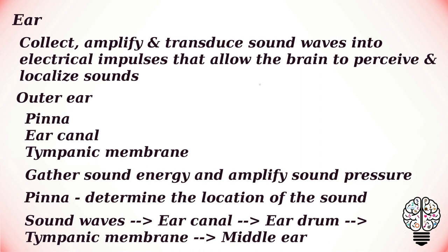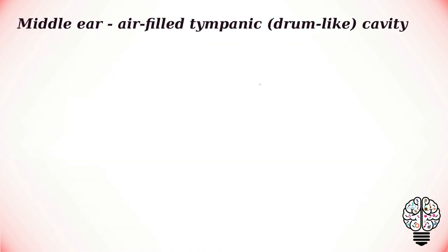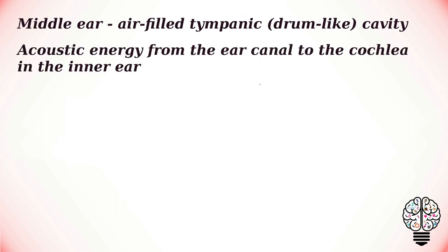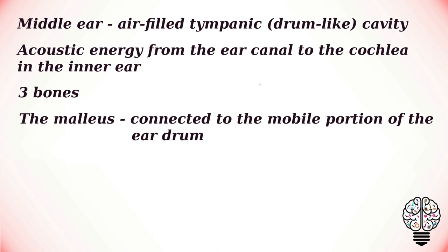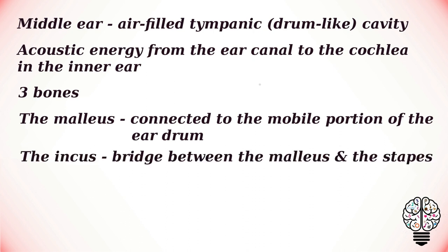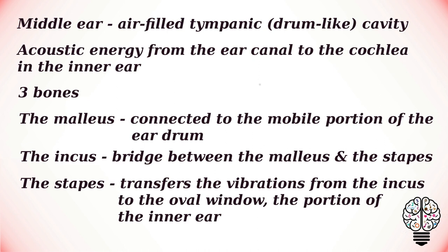Once the wave has vibrated the tympanic membrane, sound enters the middle ear. The middle ear is an air-filled tympanic, meaning drum-like, cavity that transmits acoustic energy from the ear canal to the cochlea in the inner ear. This is accomplished by three bones: the malleus, the incus and the stapes. The malleus is connected to the mobile portion of the eardrum; it senses sound vibrations and transfers them onto the incus. The incus is the bridge between the malleus and the stapes. The stapes transfers the vibration from the incus to the oval window, the portion of the inner ear to which it is connected.